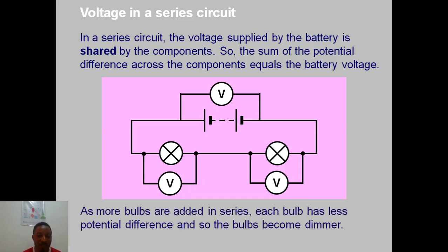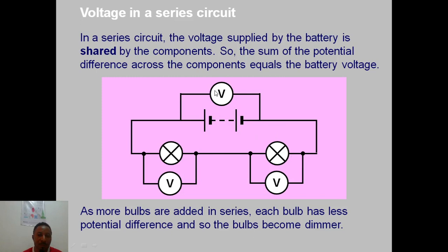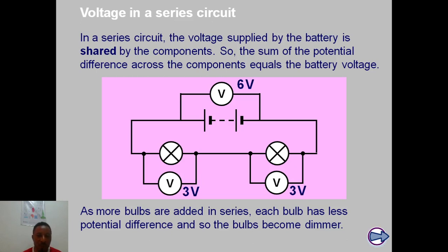As more bulbs are added in series, each has less potential difference and so the bulbs become dimmer. The energy the cell has is shared among all bulbs. If you have 1.5 volts and two bulbs, each gets 0.75 volts. With six volts and two components, each gets 3 volts; with three components, each gets 2 volts.